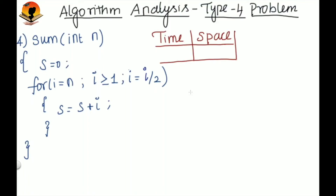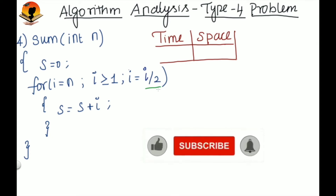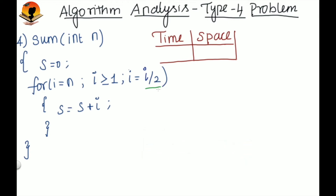Hello everyone, welcome back to my channel. In the series of algorithm analysis, next we are going to analyze the fourth type of problem — that is when the loop variable is divided by some constant. If you haven't subscribed to my channel, do subscribe and also hit the bell icon so that you will be notified whenever I upload a new video.